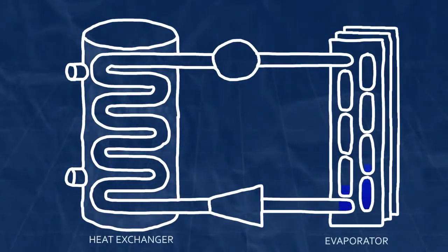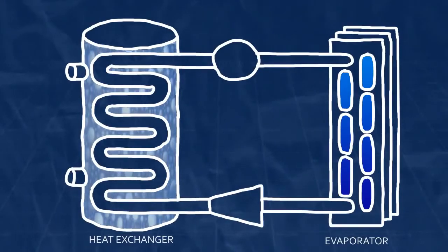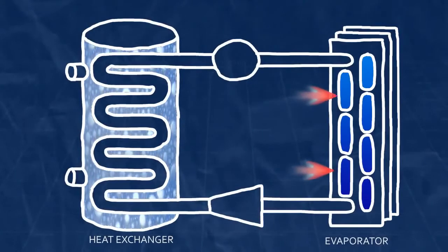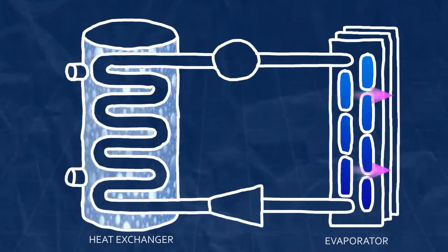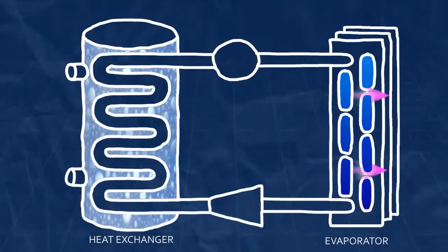In the beginning of a cycle, the refrigerant is in a cold, low-pressure, liquid-gaseous state flowing through tubes exposed to room air. It is colder than the room air, so heat in the air moves to the refrigerant. This is because heat always moves from warmer things to cooler things.